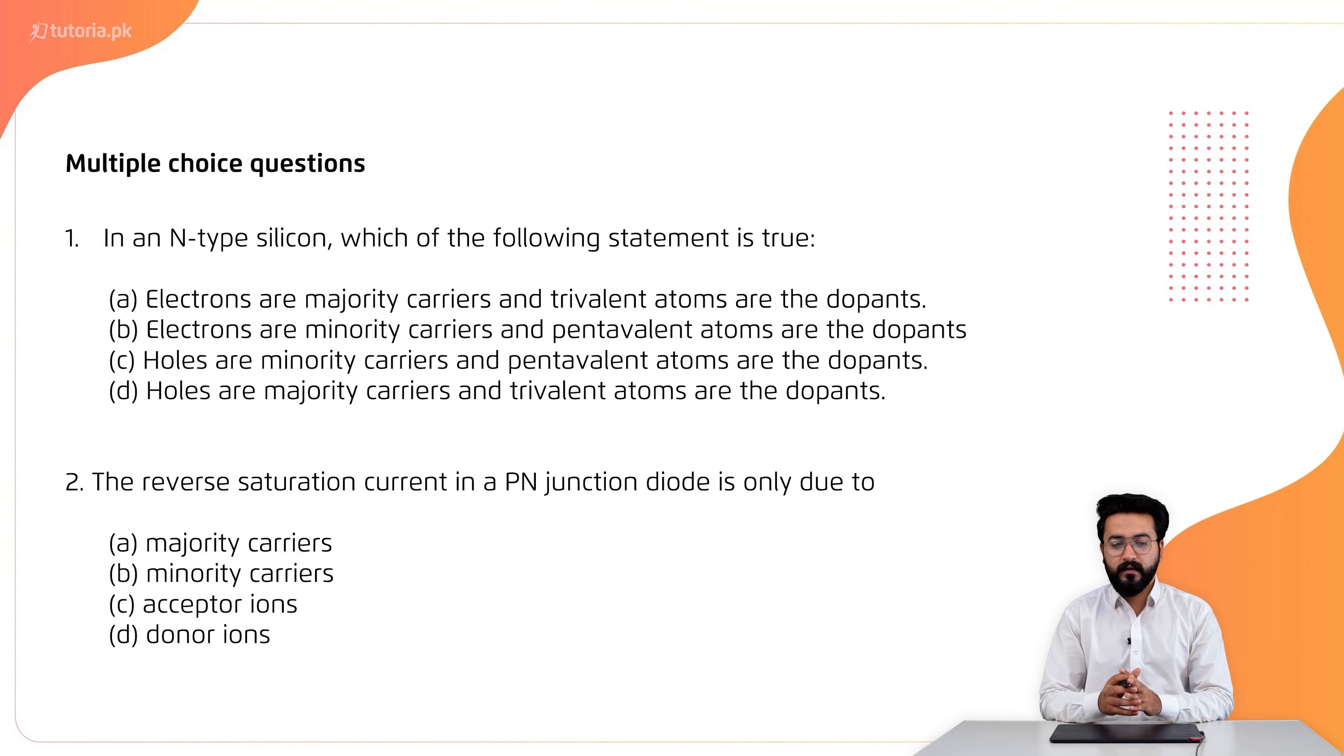Number 1 is, in an N-type silicon, which of the following statement is true? N-type silicon, which statement is true? The correct option is C, holes are minority carriers and pentavalent atoms are the dopants. So, the correct option is option C.